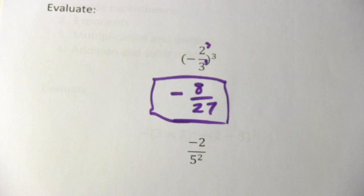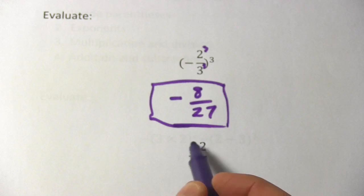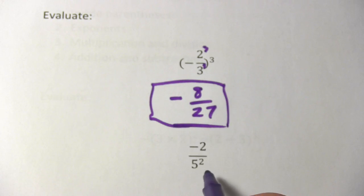Let's take a look at this one, looks a little bit different. We just have a negative two on top and a five squared on the bottom. So this power, because there's no parentheses out here with an exponent, this power only applies to that five.